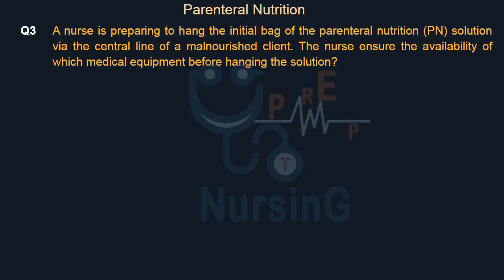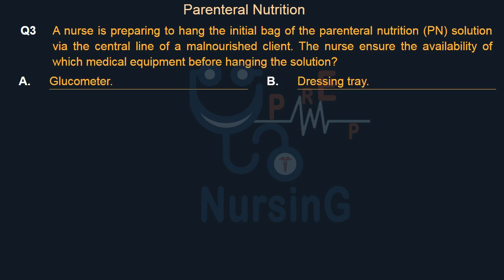A nurse is preparing to hang the initial bag of the parenteral nutrition (PN) solution via the central line of a malnourished client. The nurse ensures the availability of which medical equipment before hanging the solution? Option A: Glucometer. Option B: Dressing tray. Option C: Nebulizer. Option D: Infusion pump.